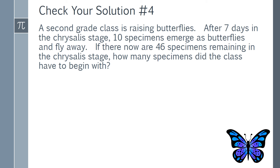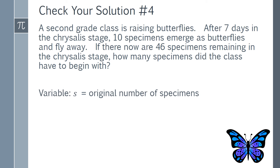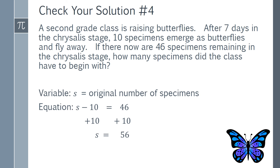Let's start by defining our variable. S will equal the original number of specimens. Now for the equation: S minus 10 equals 46. We need to take the original number of specimens and subtract the 10 which emerged as butterflies and flew away. This will equal the 46 specimens we have remaining. In order to get S by itself, we need to use the inverse operation and add 10 to both sides. So we find that S equals 56. The class started with 56 butterfly specimens.